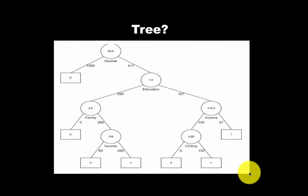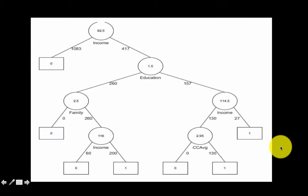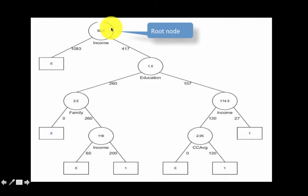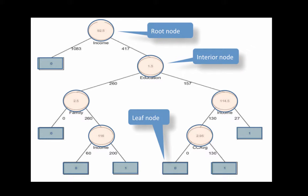Why do we call this a tree in the first place? It will start making sense if we look at it upside down — then you can see it looks more like a tree, with a root and branches going upward, branching and branching. That's why they call it a tree, and they use all kinds of tree terminology. They call the topmost node the root node, the nodes at the very tips are called leaf nodes, the connections are called branches, and the middle nodes are referred to as interior nodes. Trees occur very often in the field of computer science.